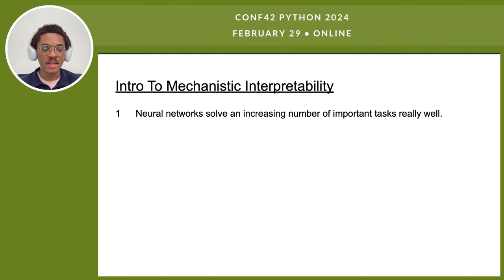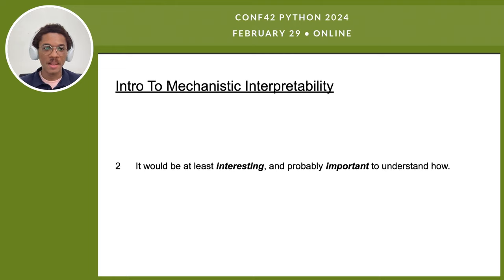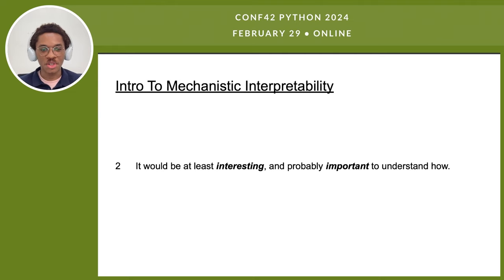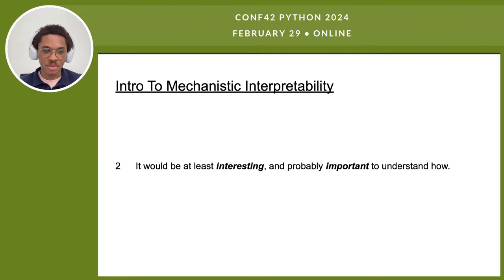A bit of a primer on this field of inquiry: what is mechanistic interpretability? Some things we can hopefully all agree on. First, neural networks solve an increasing number of important tasks, and second, it would be at least interesting and probably important to understand how they do — interesting in the sense of curiosity, to look inside this black box, since these models arrive at solutions no person could write a program for.